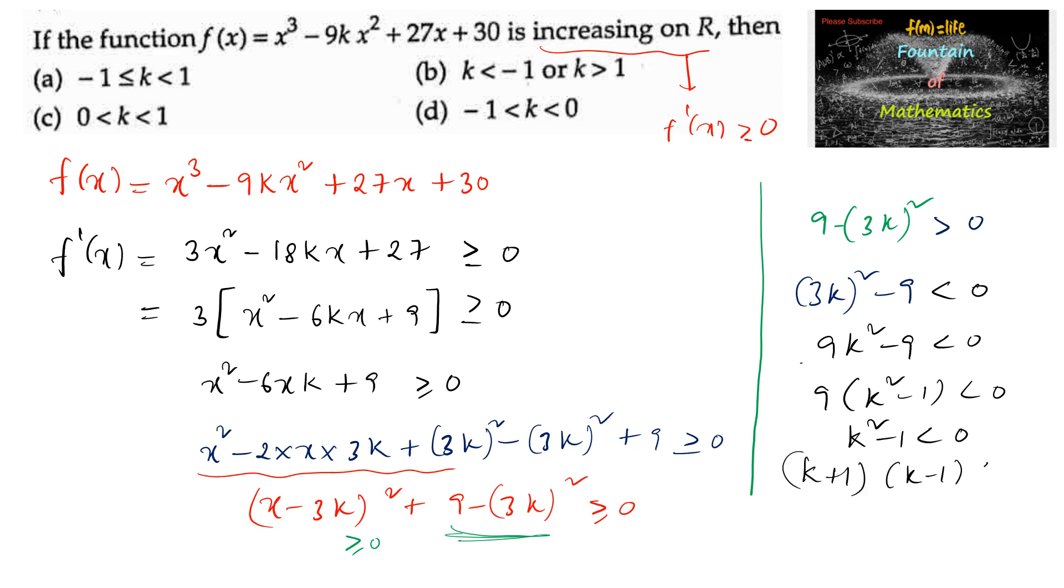From the inequality (k + 1)(k - 1) < 0, this is negative from -1 to 1. So k belongs to (-1, 1), or k lies between -1 and +1.